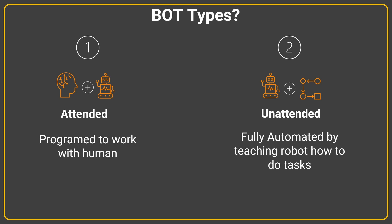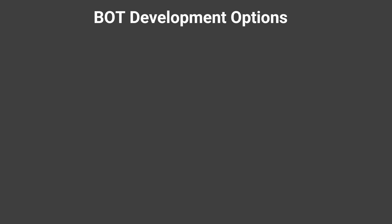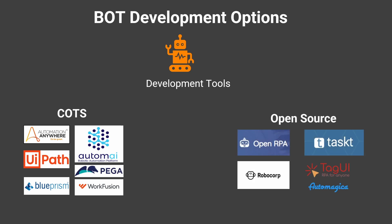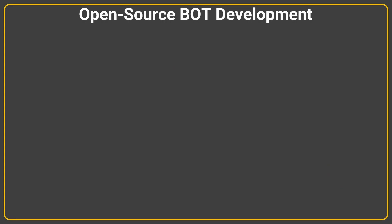This brings us to the question: what are the bot development options? From a bot development perspective we have two options. One is COTS — commercial off-the-shelf bot development platforms — which are very popular in the marketplace. Popular options include UiPath, Automation Anywhere, Pega, WorkFusion, and Blue Prism. The other option is open source, which includes OpenRPA, Robot Framework, RoboCop, TagUI, and Automagica. At the time of recording, some of these open source products are in a transitional phase toward becoming commercial COTS products.